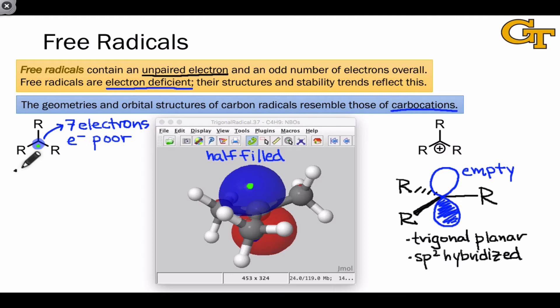But this is still an electron-deficient species because of the seven electrons associated with the radical carbon. Notice that the geometry at the radical center is still trigonal planar, just like the carbocation case, and the hybridization implied by the fact that the radical electron is in a pure p-orbital, which we can see just by the shape here, must be sp2. This is suggested by the geometry as well.